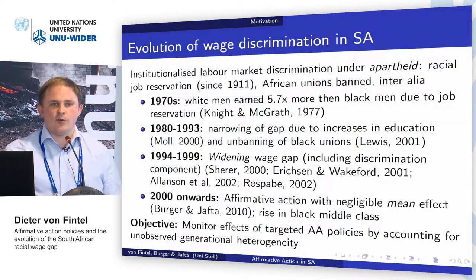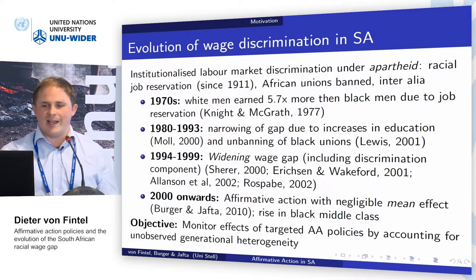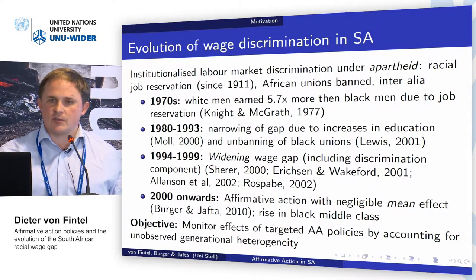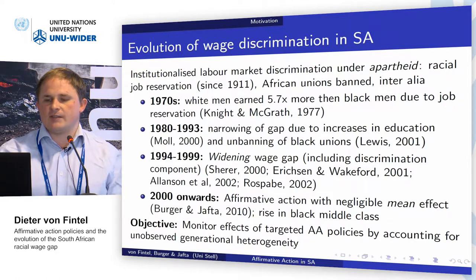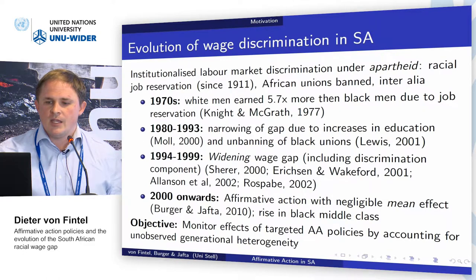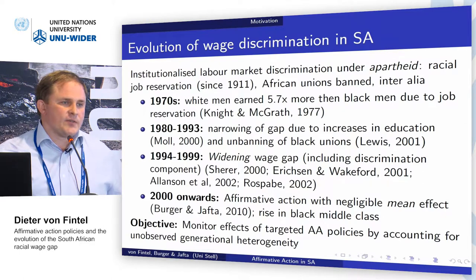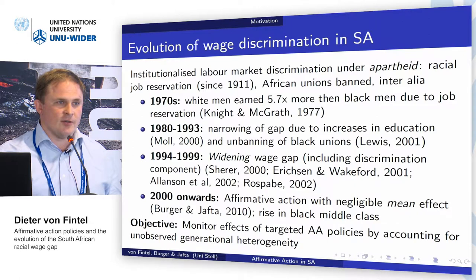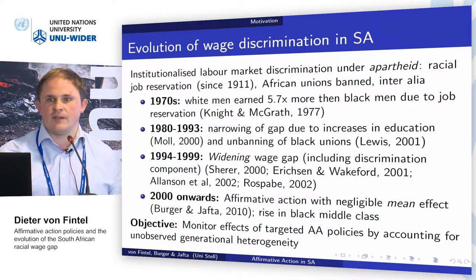Unexpectedly, in 1994 when democracy appeared and many of these laws were dismantled, we actually witnessed a widening wage gap and especially a worsening of the discrimination component. This wasn't due to greater gaps in productive characteristics such as education — discrimination actually worsened. One reason may be that there were no formal laws yet in place to counter discrimination effectively; this only came after 1998.